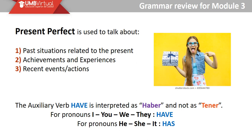En español lo traducimos como: yo he viajado, yo he conocido, yo he estudiado, yo he trabajado. Lo vamos a conjugar en inglés con el 'have' del verbo haber, o el 'has' en tercera persona — it depends according to the subject we are using. The auxiliary verb 'have' is interpreted as 'haber' and not as 'tener.' For pronouns I, you, we, and they, we use 'have.' For pronouns like he, she, it, we use 'has.'